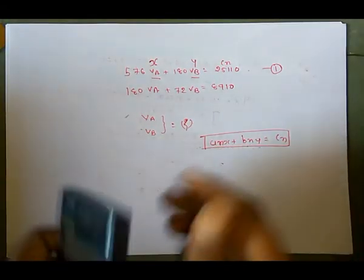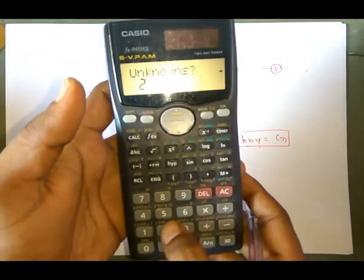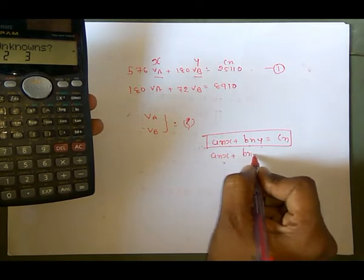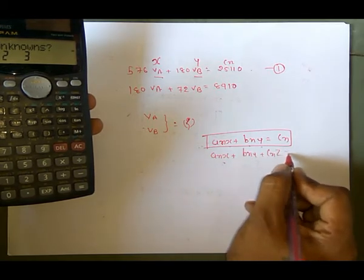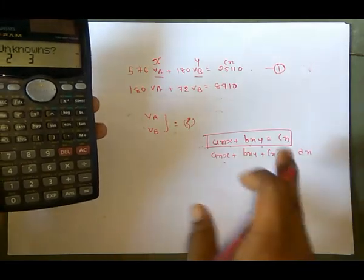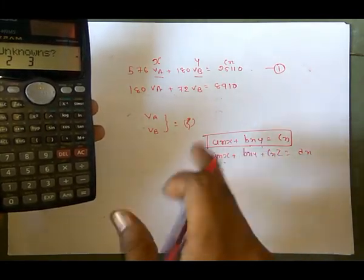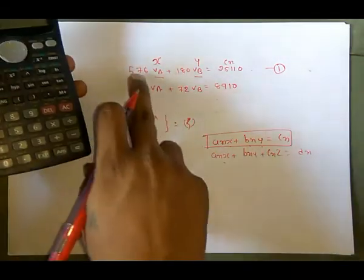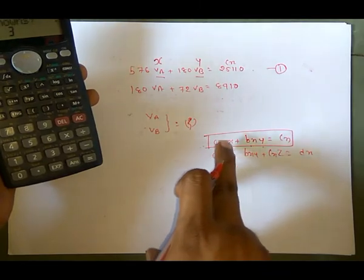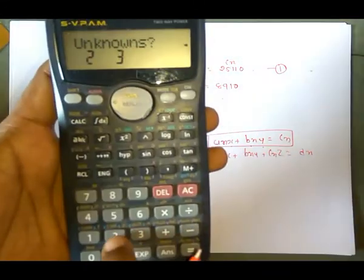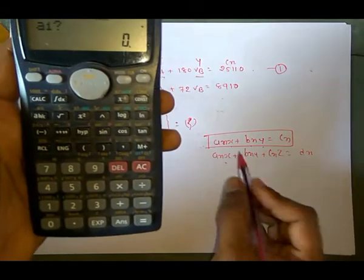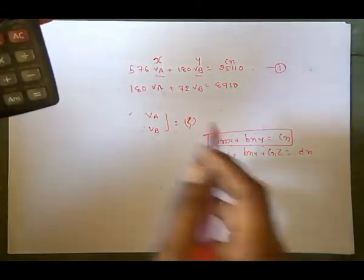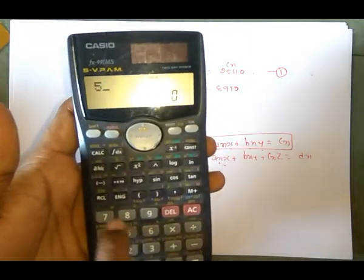We press 2 for two unknowns, x and y. If we had three unknowns, the format would be a_n·x plus b_n·y plus c_n·z equals d_n. But right now we have two unknowns, so press 2. The calculator asks for a1 — our a1 equals 576, so press 576.